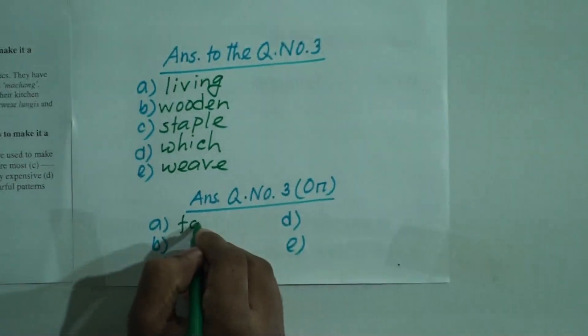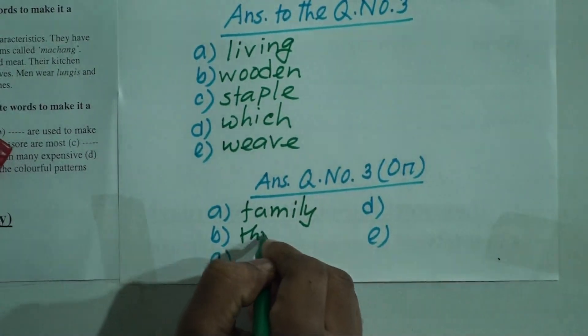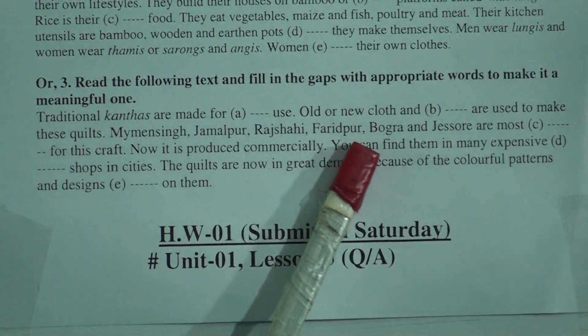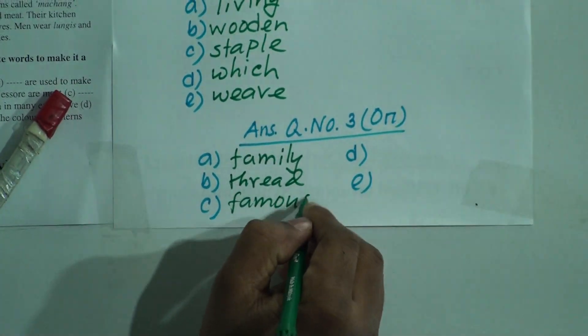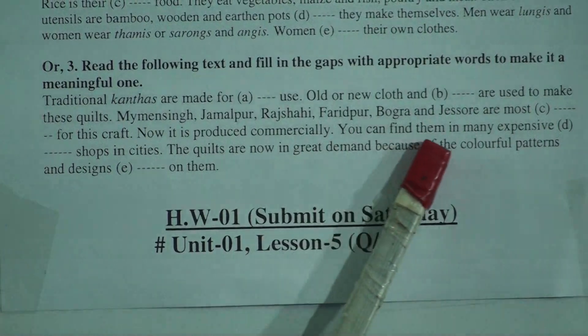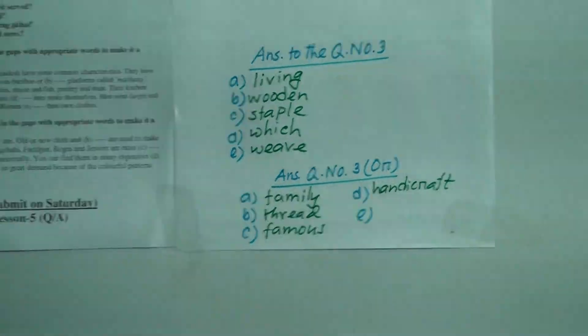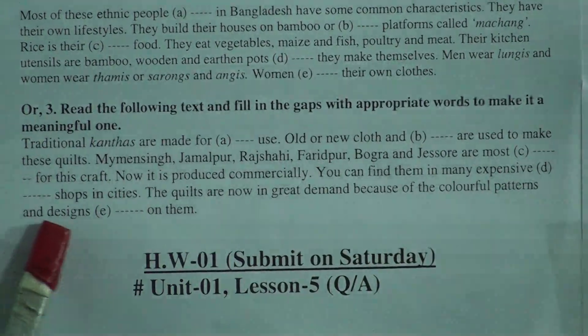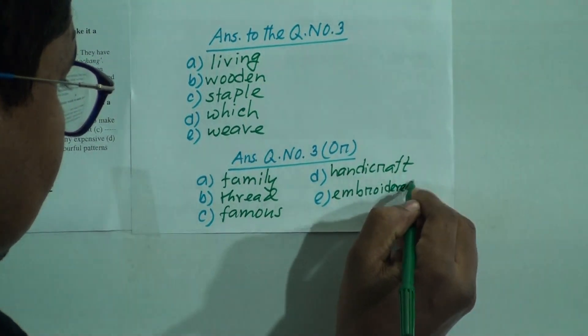Traditional kanthas are made for family use. Old or new clothes and thread are used to make these quilts. Mymensingh, Rajshahi, Bogura, and Jashore are most famous for this craft. It is now produced commercially and you can find them in many expensive handicraft shops in cities. The quilts are now in great demand because of the colorful patterns and designs embroidered on them.